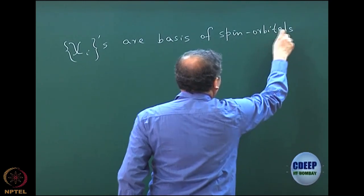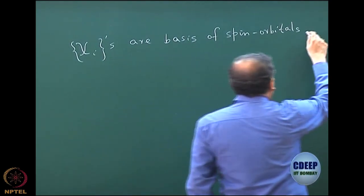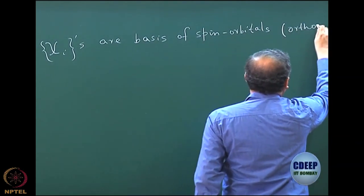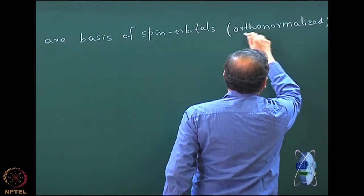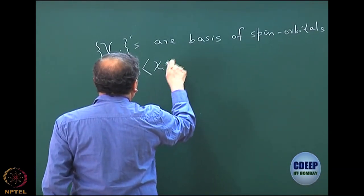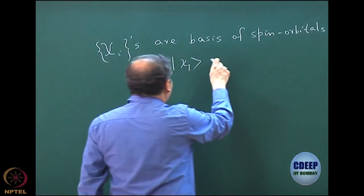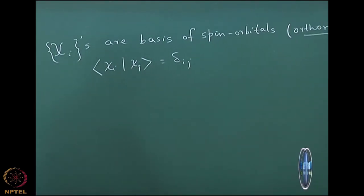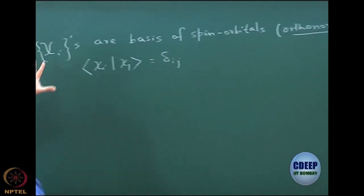Spin orbitals are functions of both spin and space parts. I deliberately choose them to be orthonormalized, which is of course a very convenient choice. This essentially means that for any two spin orbitals chi_i and chi_j, if I integrate chi_i* chi_j, the result is a Kronecker delta, delta_ij. That is the meaning of orthonormalization. So I start with a basis of spin orbitals which are basically one-electron functions.